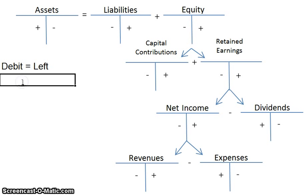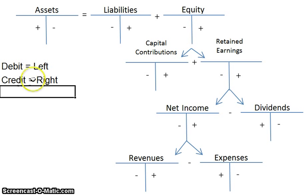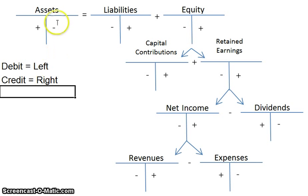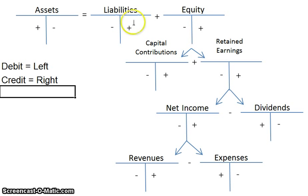And the word credit is just another word for right — that's all you need to know. It means that you're recording something on the right-hand side. So if you record something on the right-hand side of an asset account, it means something different than if you record something on the right-hand side of a liability account. That's when it makes the difference.